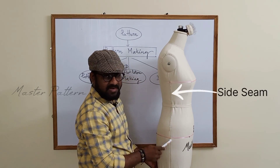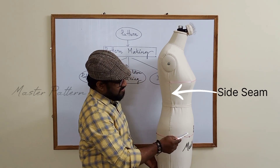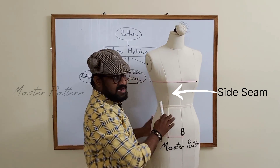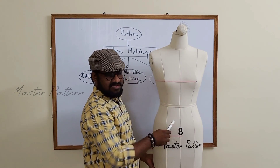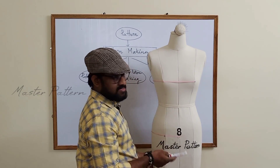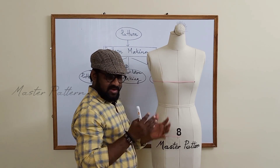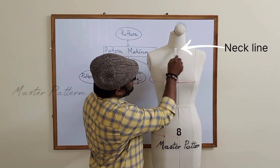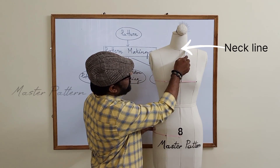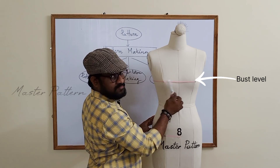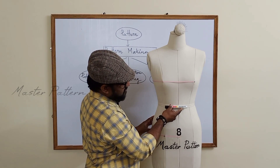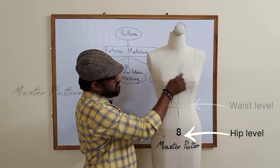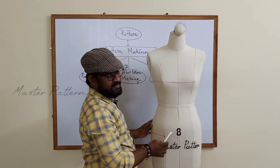The third line is the side seam, where the front and back will join. If you understand these lines, it's easy to find the rest of the parts. We also need to find the levels: the first level is the neckline, then bust level, waist level, and hip level — four levels in total.